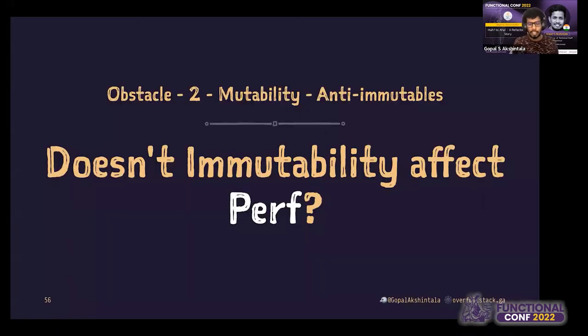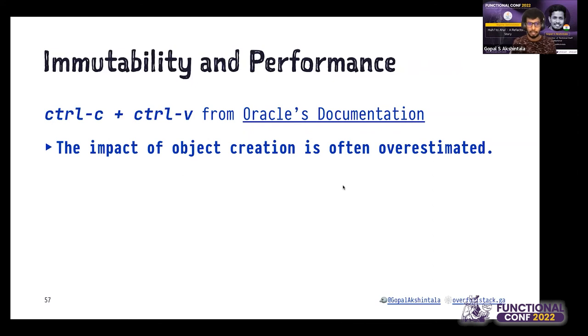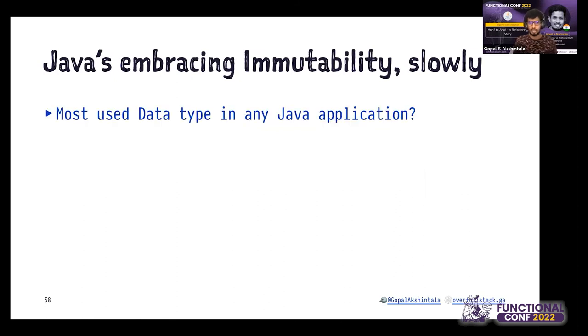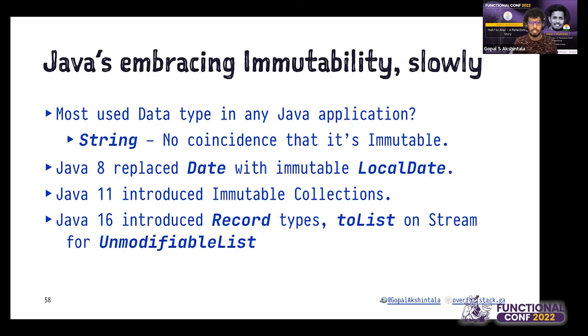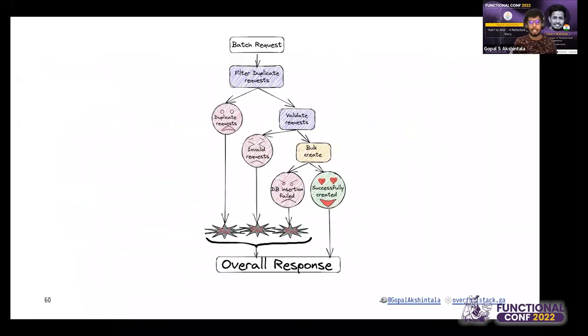Doesn't immutability affect performance? I would point you to Oracle documentation which says this is overestimated—object creation is not really affecting performance a lot. There's been a lot of improvement in garbage collection which removes that particular problem. Java is embracing immutability very slowly. It has been introducing new stuff in each release. We're also going to see Hello World, but I'm not going to go into details because of limited time.